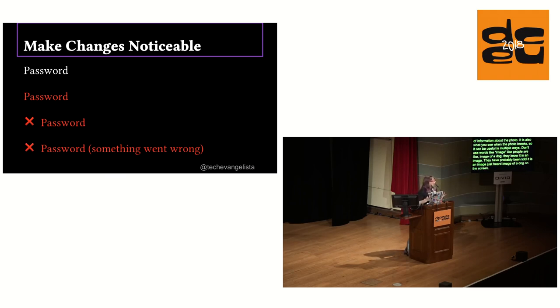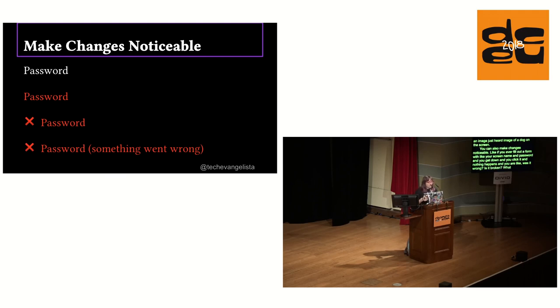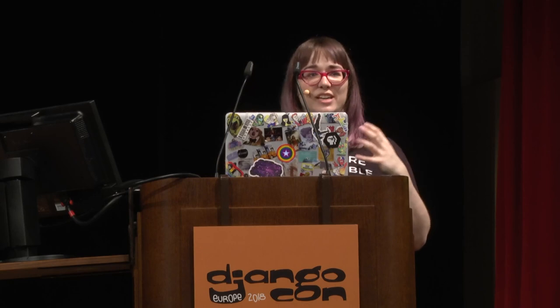You can also make changes noticeable. If you fill out a form and click submit and nothing happens, it's hard to understand what to do. But if it gives you feedback — maybe it makes the word 'password' red, and then you know it's the wrong password — that's still not very noticeable. So some people add an X in red next to the field, or you can go further and put an actual message like 'Hey, your password's wrong,' so people actually understand what happened without having to put in their password over and over again.